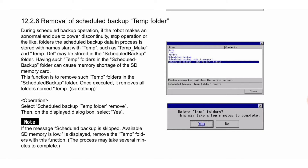Next is removal of scheduled backup temp folder. During scheduled backup operation, if the robot makes an abnormal end due to power discontinuity, stop operation, or the like, folders where the scheduled backup data in process is stored with names starting with 'temp' such as 'temp_make' and 'temp_del' may be stored in the scheduled backup folder. Having such temp folders can cause memory shortage of the SD memory card. This function removes all folders named 'temp something'. Operation: select Scheduled Backup Temp Folder Remove, then on the displayed dialog box select Yes. Note: if the message 'scheduled backup is skipped, available SD memory is low' is displayed, remove the temp folders with this function. The process may take several minutes to complete.